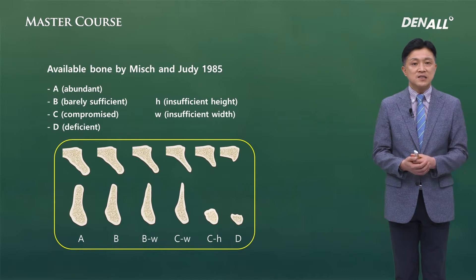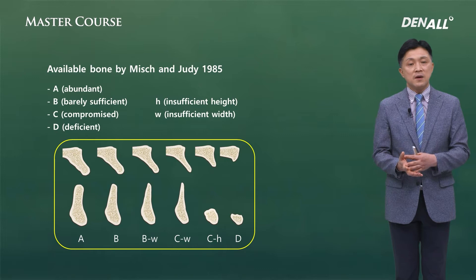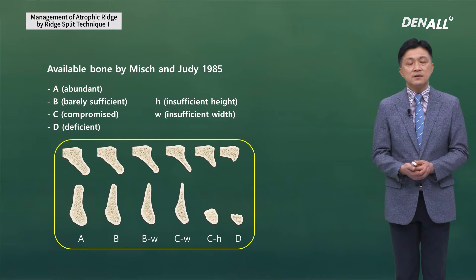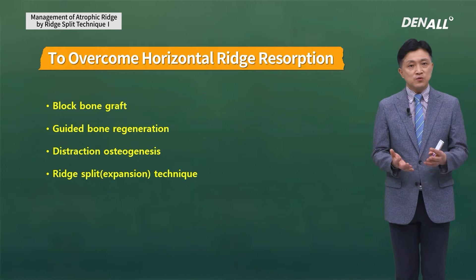Two times more resorption occurs on the buccal side compared with the lingual side. Let's look at the category of available bone presented by Misch. With time, there is horizontal bone resorption followed by vertical bone resorption, and in the end, basal bone is the only thing that remains. This is a physiological process.